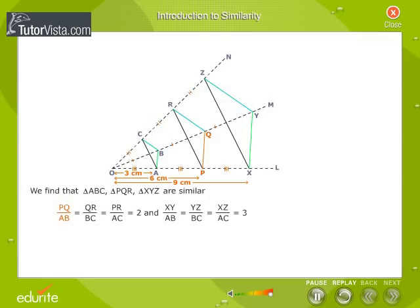Therefore, PQ by AB is equal to QR by BC is equal to PR by AC. That is equal to 2.